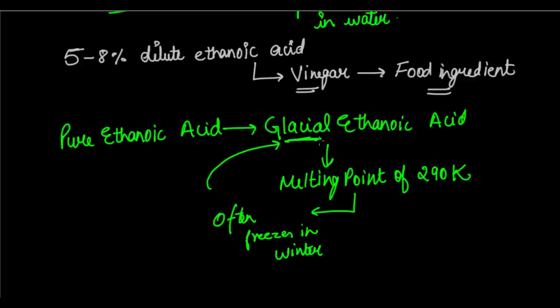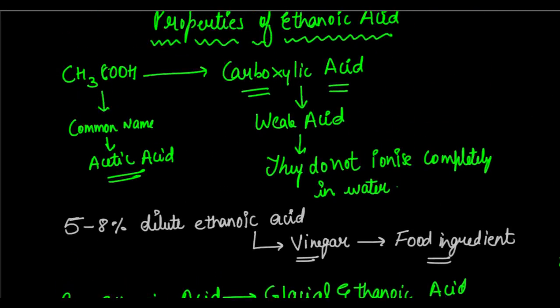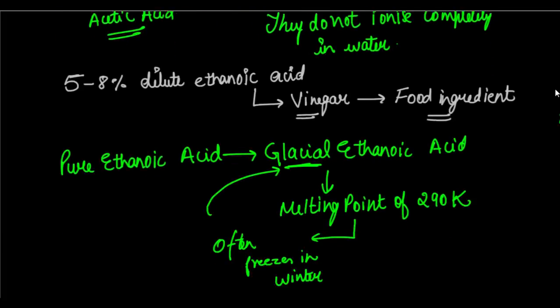Glaciers, as you know, are frozen icebergs. So glacial acetic acid freezes like a glacier. These are basically the physical properties of ethanoic acid. Now we come to the chemical properties.